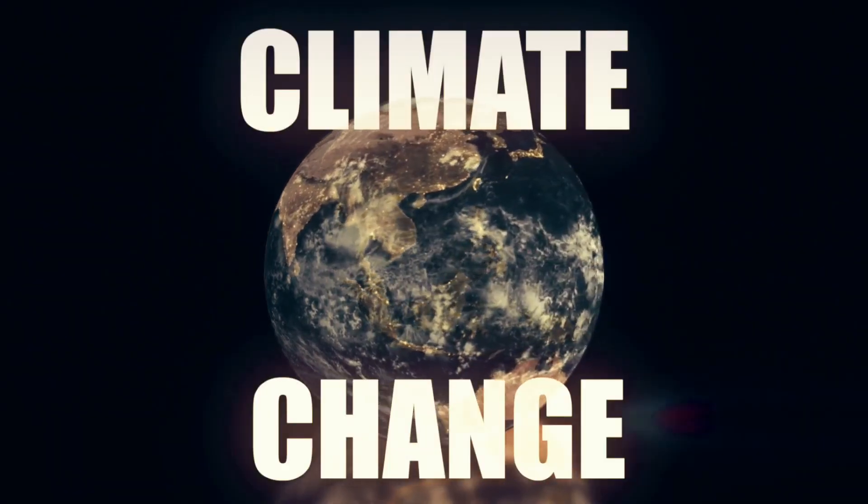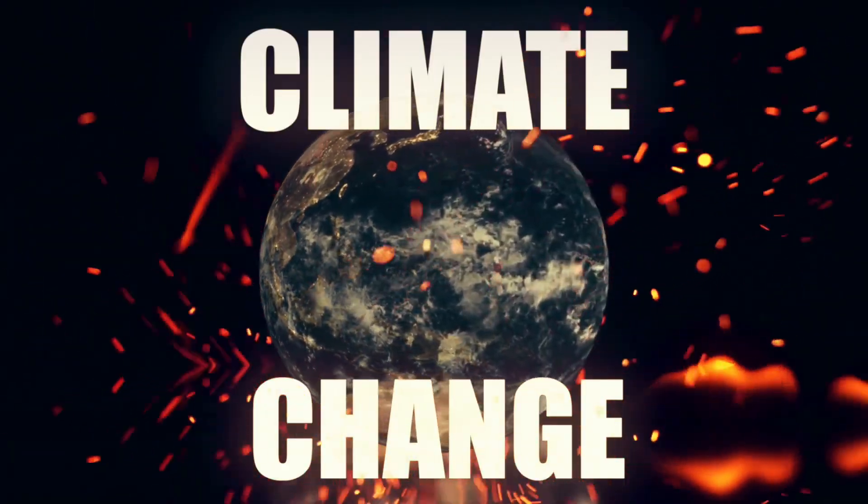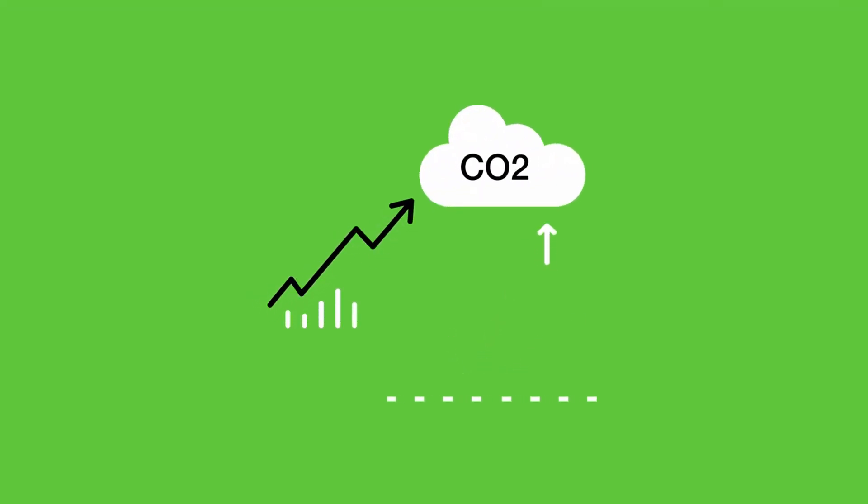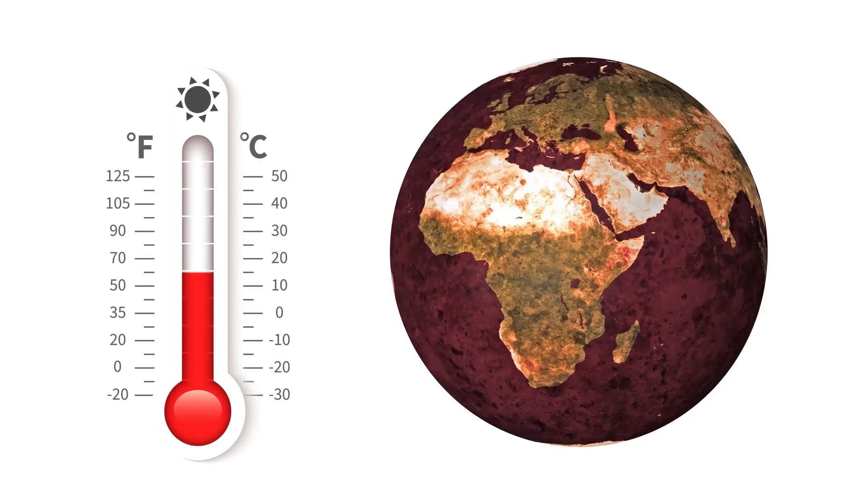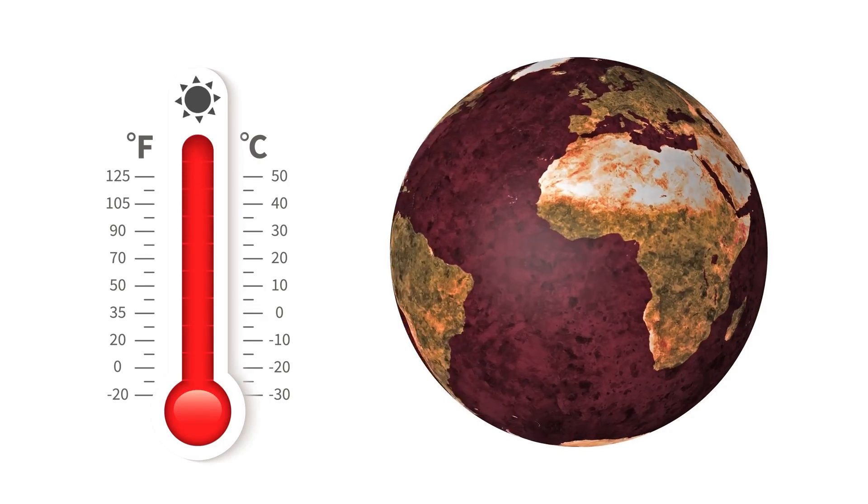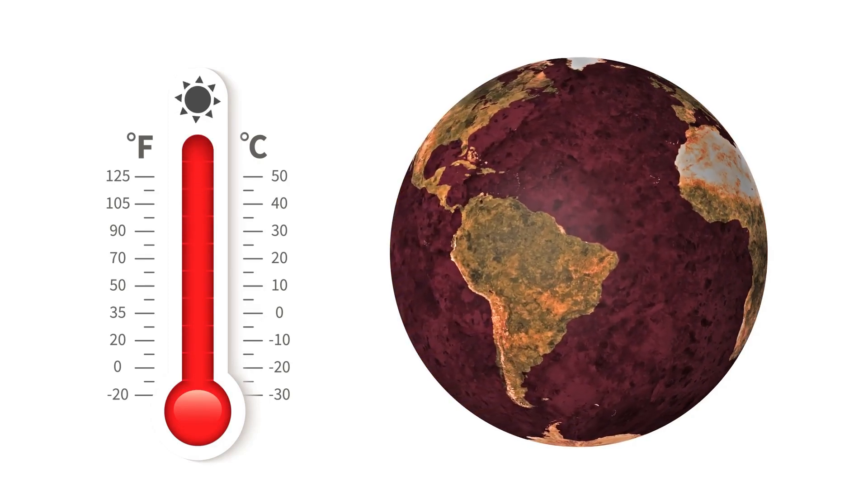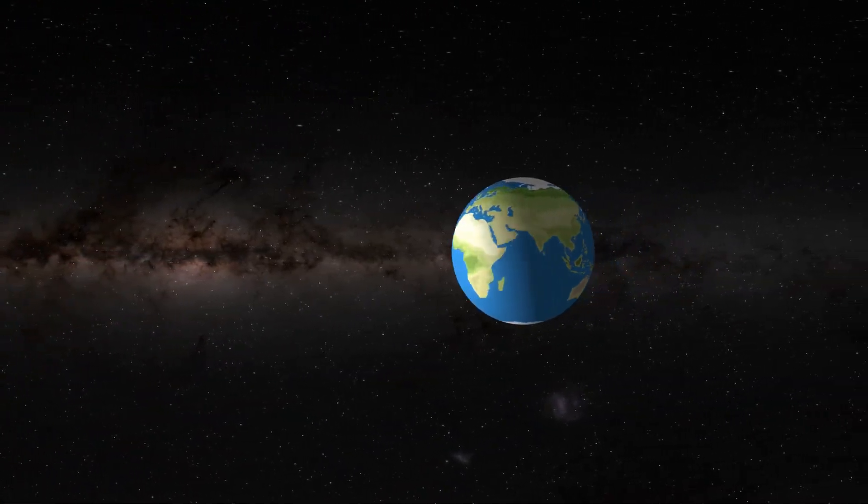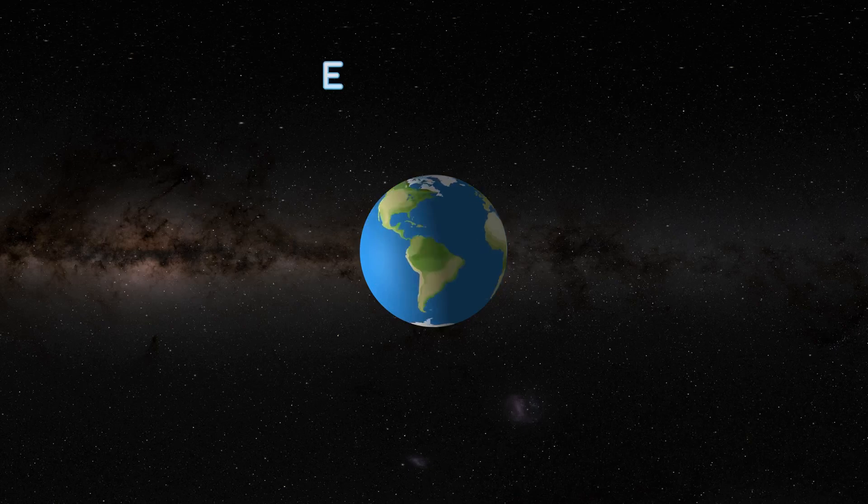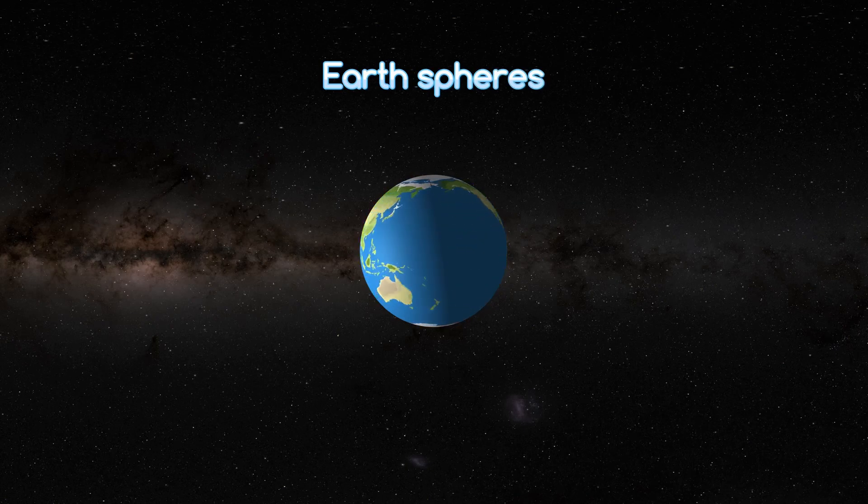One compelling example of this self-regulation is the Earth's climate system. Through the carbon cycle, where carbon dioxide is exchanged between the atmosphere, oceans and land, Earth has maintained relatively stable temperatures over billions of years, despite significant variations in solar radiation. This delicate balance, maintained by the interplay of living organisms and geological processes, highlights Earth's remarkable ability to self-regulate.